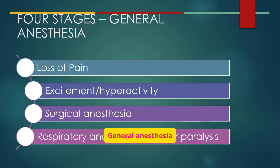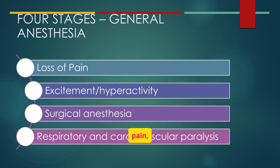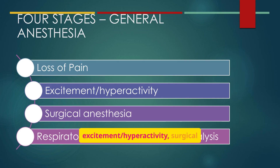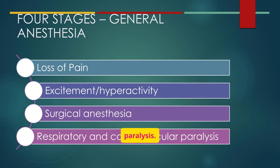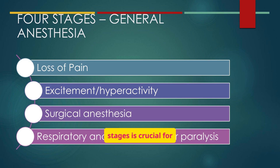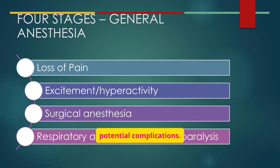General anesthesia progresses through four stages: loss of pain, excitement and hyperactivity, surgical anesthesia, and respiratory and cardiovascular paralysis. Understanding these stages is crucial for anticipating and managing potential complications.